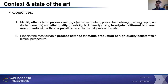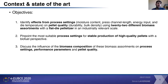The second objective was to pinpoint the most suitable process setting in order to obtain a stable production of high-quality pellets with a biofuel perspective. So the calorific value and the ash content were also analyzed. And finally, to discuss the influence of the biomass composition of this biomass assortment on the process settings and also the performance parameters and of course the pellet quality.